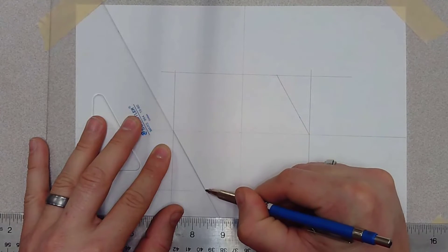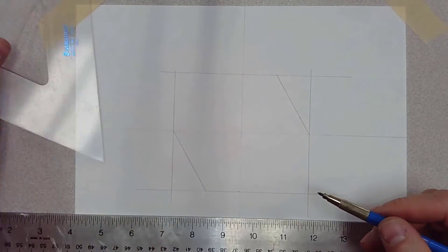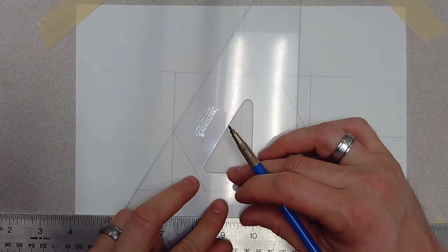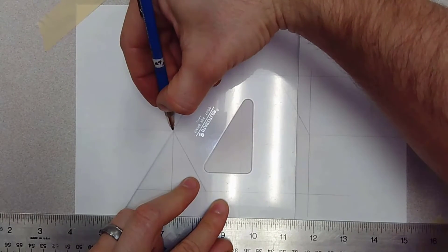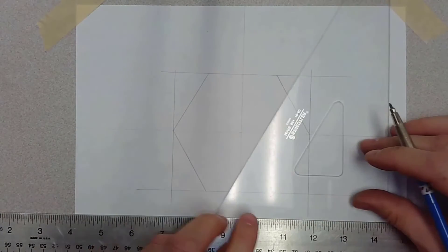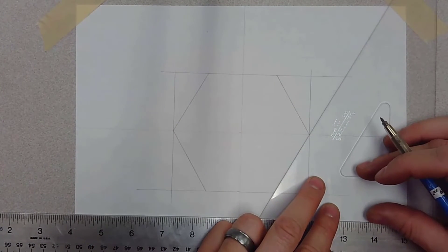All you have to do is take your 60-degree set square, and go from that middle line and the outside edge of your construction lines, and draw four 60-degree lines, and then infill it.